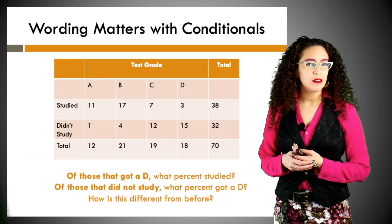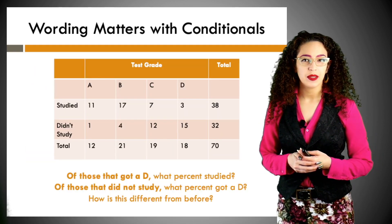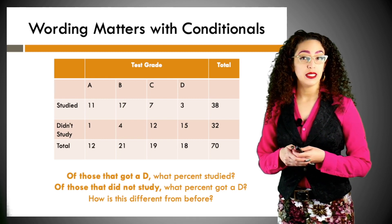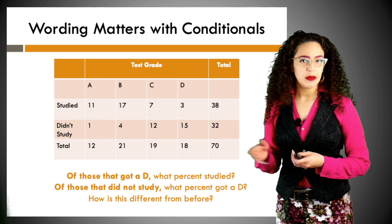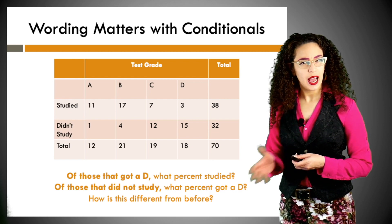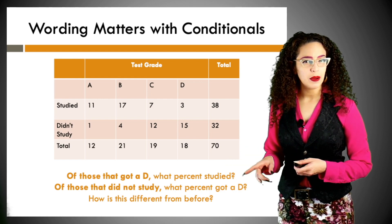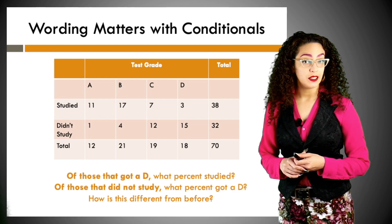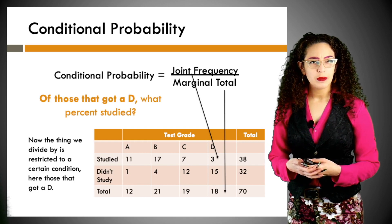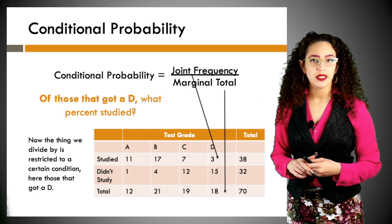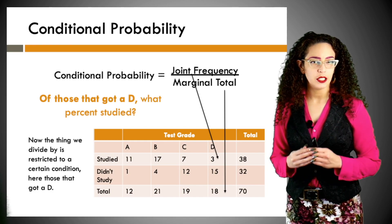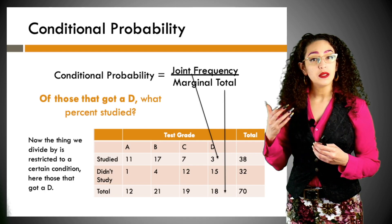Now let's look at one more type of probability, worded very differently. Of those that got a D, what percent studied? Of those who did not study, what percent got a D? These might sound like the same question — but they're not. The last type we'll discuss is conditional probability. This is different in that we are conditioning on a particular situation or something that has already happened.